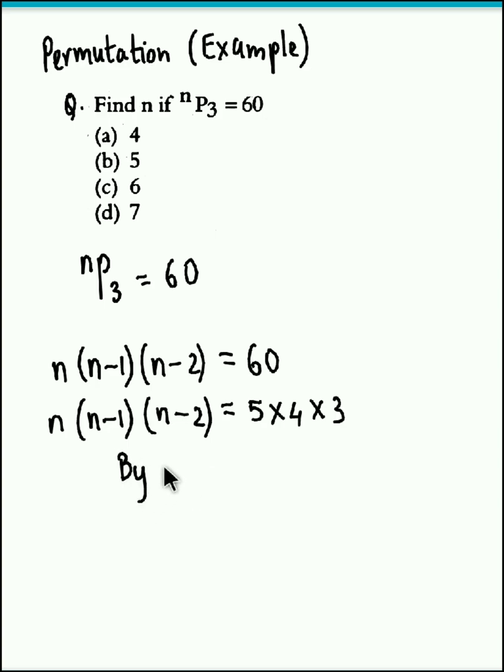So we compare both the sides and we obtain the value of n. Now we equate the first term with the first term or second with the second or third with the third. In all cases we are going to get the answer as n equal to 5. So this is the required value for n.